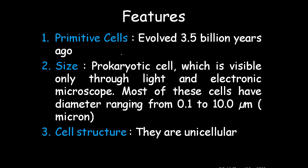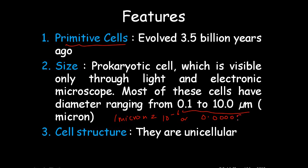Now we will see about the features of prokaryotic cells. They are the primitive cells; they evolved around 3.5 billion years ago. The size of the prokaryotic cell is visible only through light or electron microscope. Most of these cells have a diameter ranging from 0.1 to 10 microns. One micron equals 10 to the power minus 6, or 0.00039 inches.